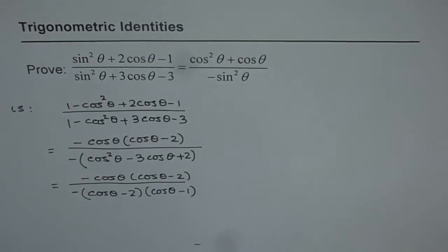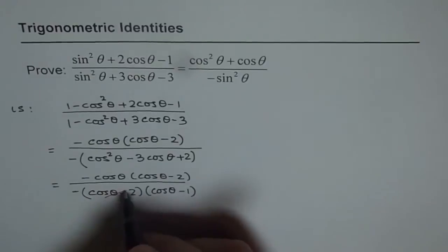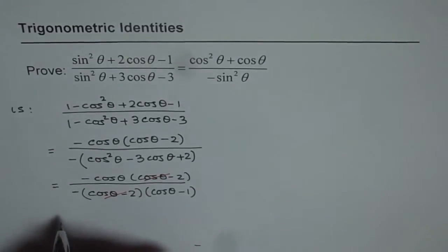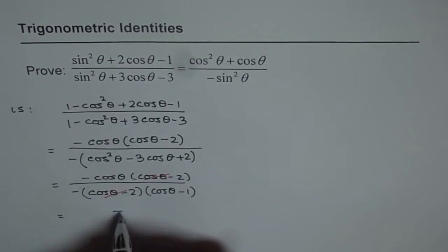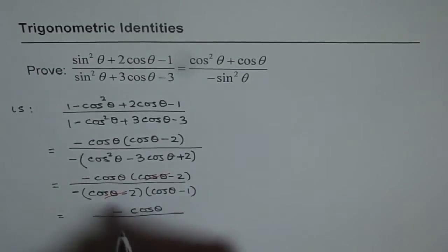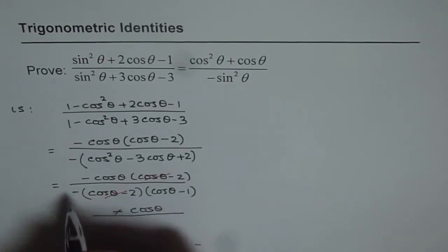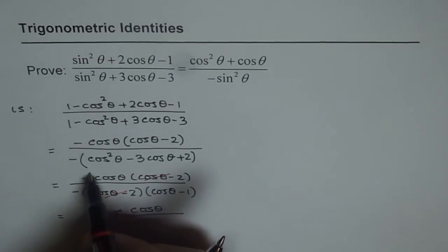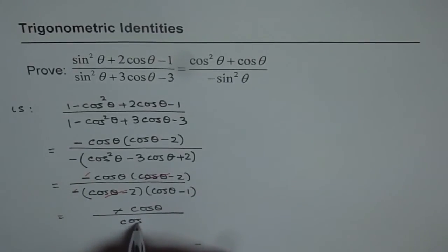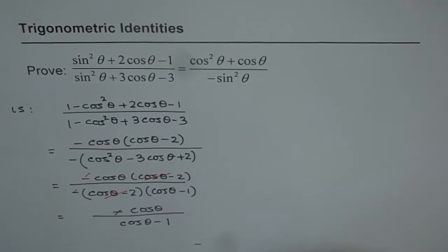Now as you can see we have a common factor in numerator and denominator which cancels out. So we are left with −cosθ over cosθ − 1.